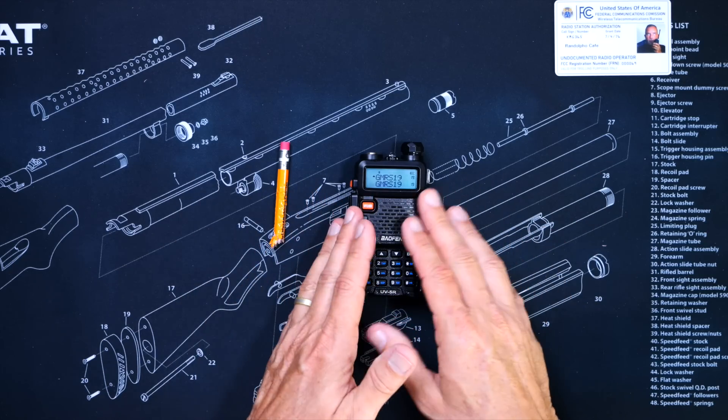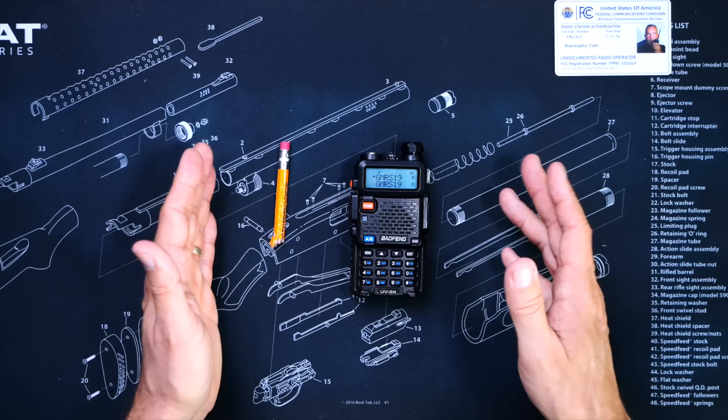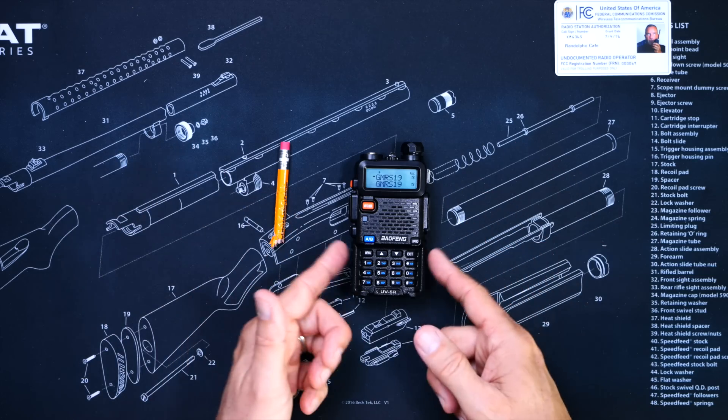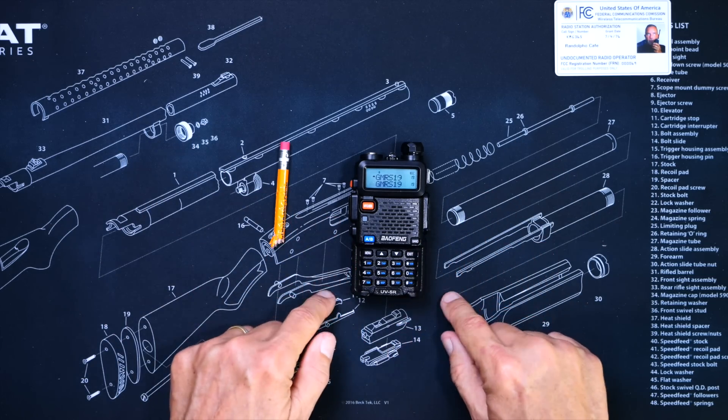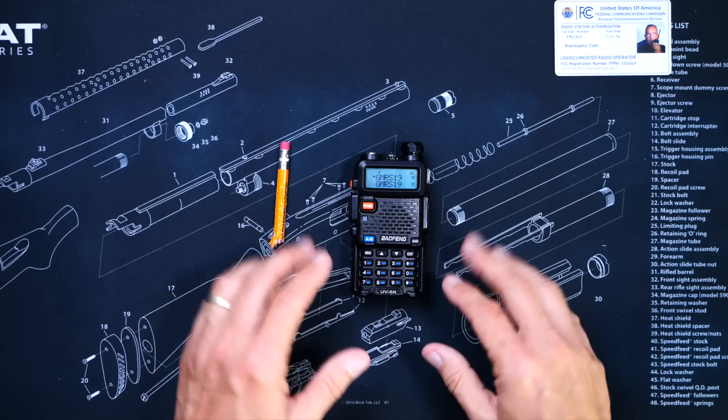You might be able to unlock your radio to transmit on more frequencies, or maybe not. If you have a Baofeng UV5R GMRS version, or any GMRS radio,